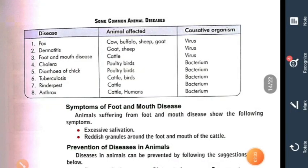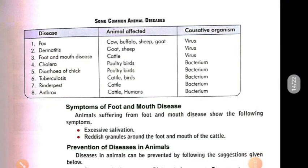Here is a table listing animal diseases, the animals affected, and the causative microorganisms responsible. The diseases listed include pox, dermatitis, foot-and-mouth disease, cholera, diarrhea, tuberculosis, rinderpest, and anthrax.